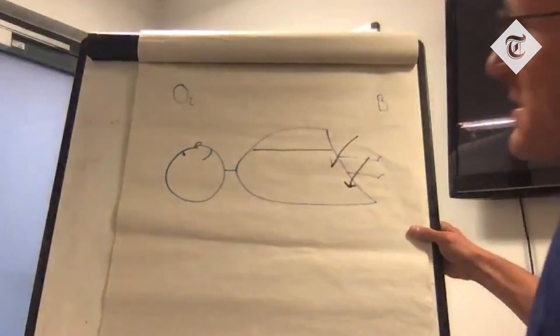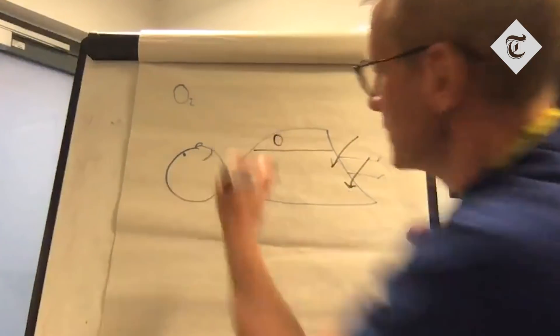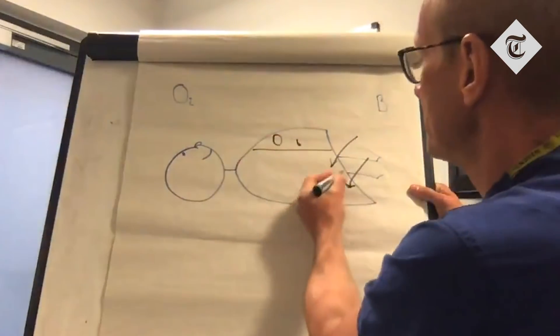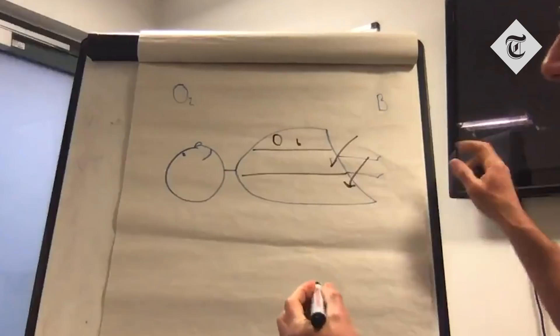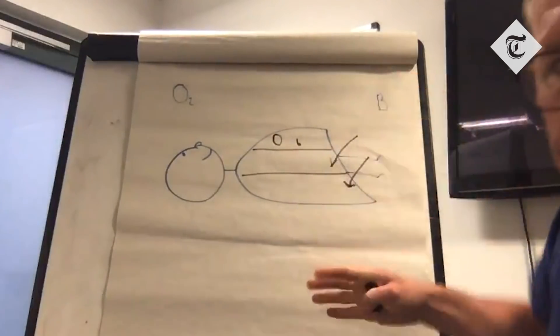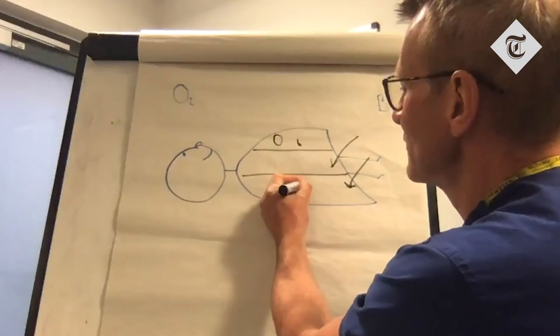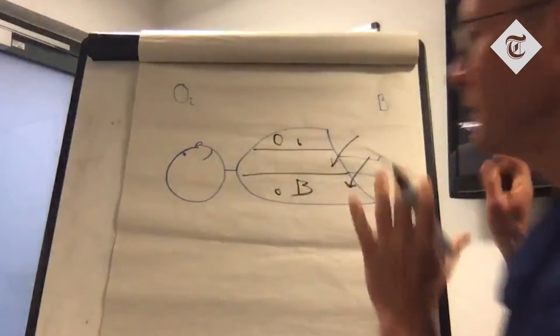We have the top part, which isn't squashed, so it has lots of oxygen, but because blood flows with gravity, it doesn't get much blood. We have the bit at the bottom that's squashed by the bowel, and because it's at the bottom, it doesn't get much oxygen, but gravity sends all the blood there, and the bit in the middle that's about right.